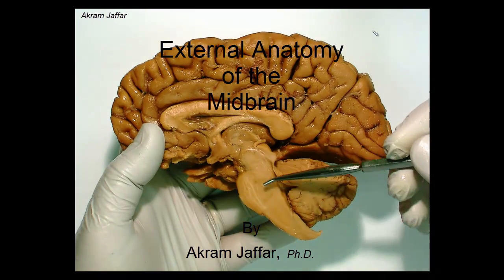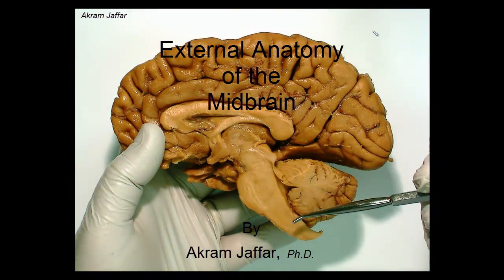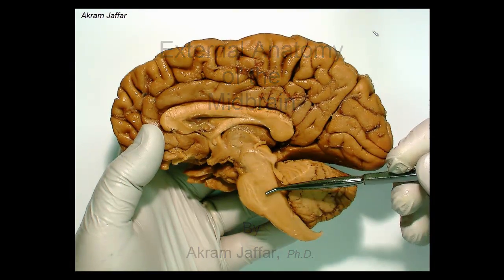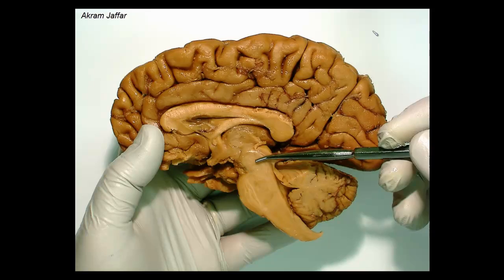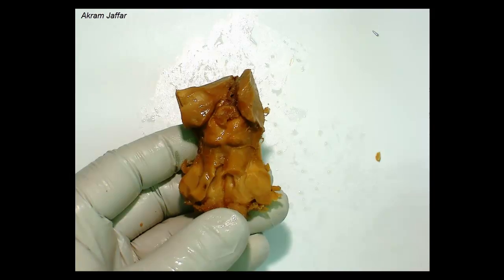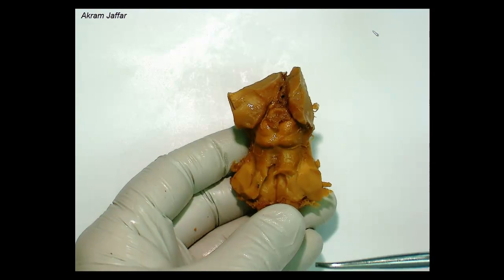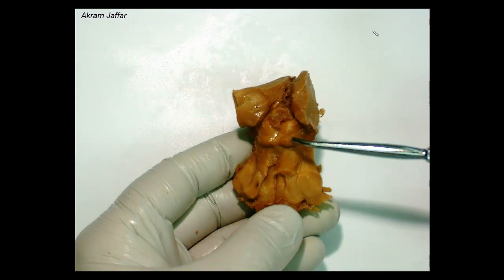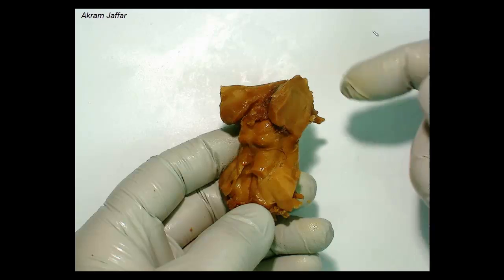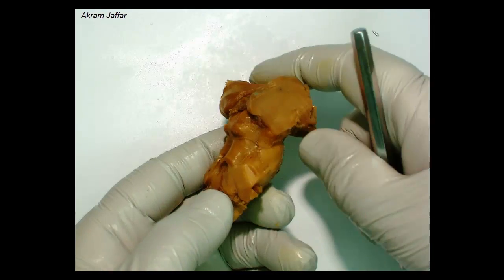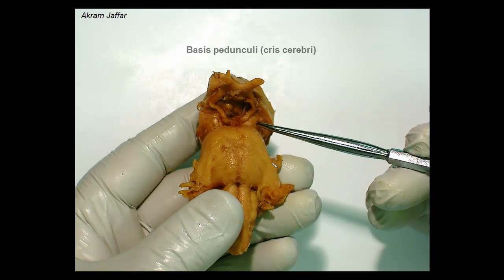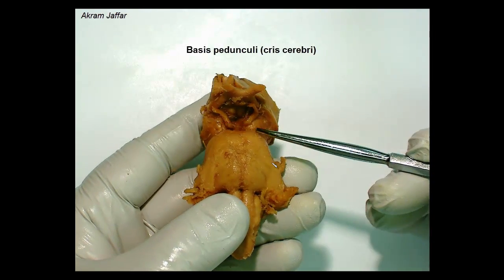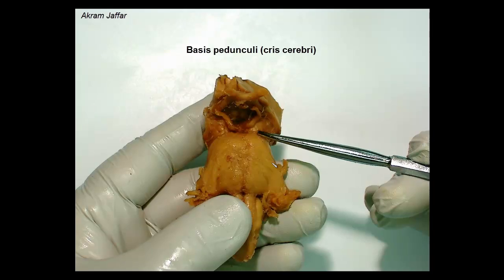The brainstem consists of the medulla oblongata, the pons, and the midbrain. The midbrain is the shortest part of the brainstem. Anteriorly, this is the region of the basis pedunculae, or the crus cerebri.